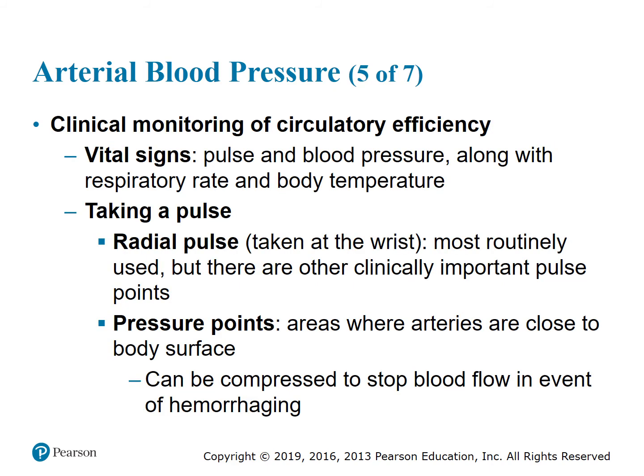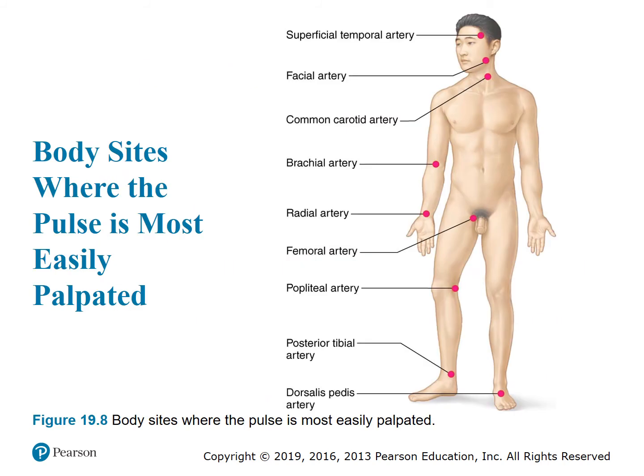Clinical Monitoring of Circulatory Efficiency: vital signs include pulse and blood pressure along with respiratory rate and body temperature. Taking a pulse — there's the radial pulse taken at the wrist, most routinely used, but there are other clinically important pulse points. Pressure points are areas where arteries are close to the body surface and can be compressed to stop blood flow in the event of hemorrhage. Figure 19.8 shows body sites where the pulse is most easily palpated.